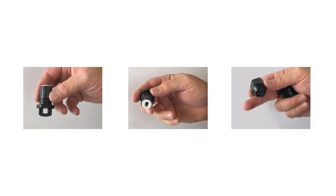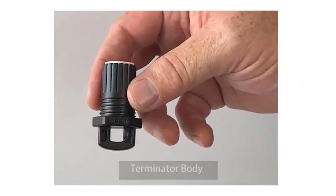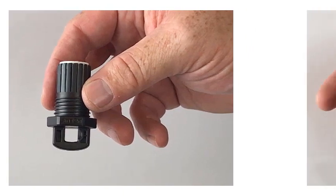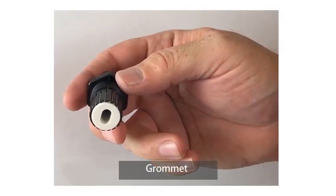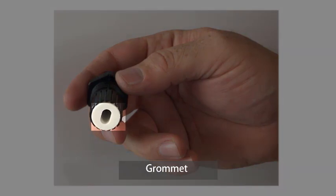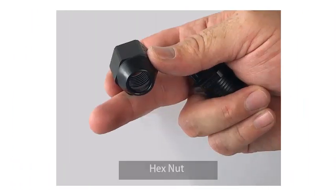Let's start by getting familiar with the Terminator parts that you will need for assembly. This is the Terminator body. This is the grommet that fits inside the Terminator body. And this is the hex nut.